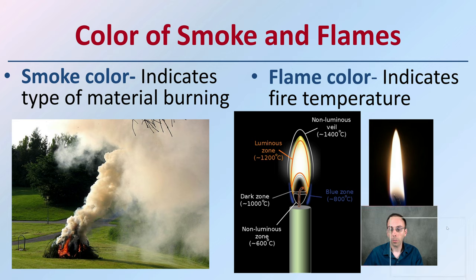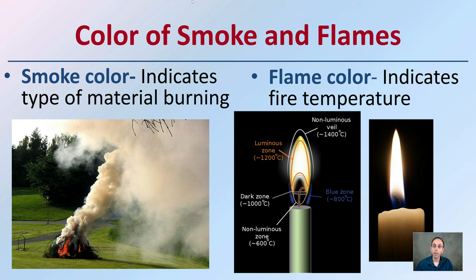If someone captured a picture of an actively burning fire, the color you see can provide clues. Smoke color indicates the type of material burning — for instance, fresh green conifers produce a lot of smoke, while cured hardwoods like oaks and maples create an almost no-smoke coloration. Flame color indicates fire temperature, as we see with the candle flame here: the blue zone is about 800 degrees Celsius, and the upper portion can reach 1,200 to 1,400 degrees Celsius. That coloration of the flame can provide a general indication of how hot the fire is burning.